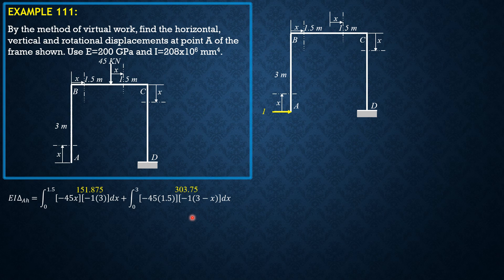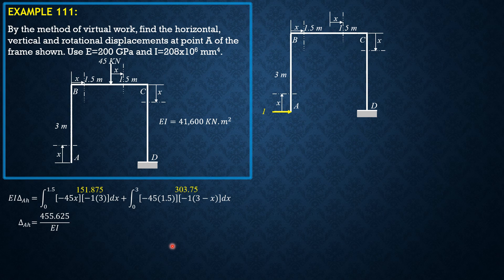EI equals 200 times 10 to the 6 kilopascals times 208 times 10 to the 6, divided by 1000 to the 4th to convert to meters to the 4th — giving units of kilonewton-meter squared. Combining, we get 455.625 over EI, where EI equals 41,600 kilonewton-meter squared. We divide by 41.6 so the resulting unit is in millimeters, giving the horizontal deflection at A as 455.625 divided by 41.6.